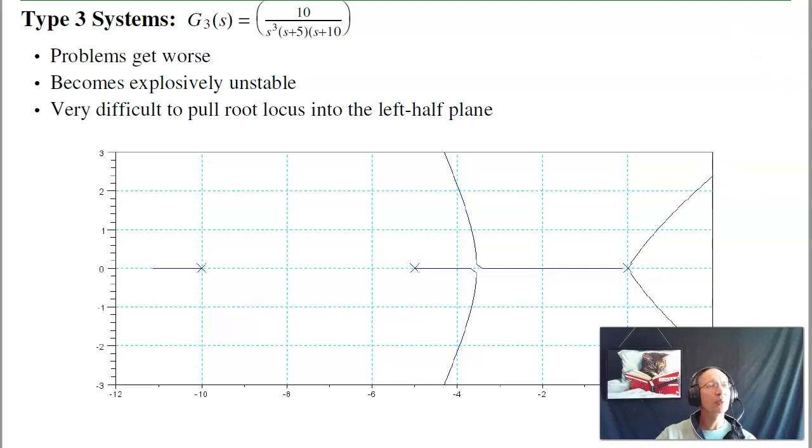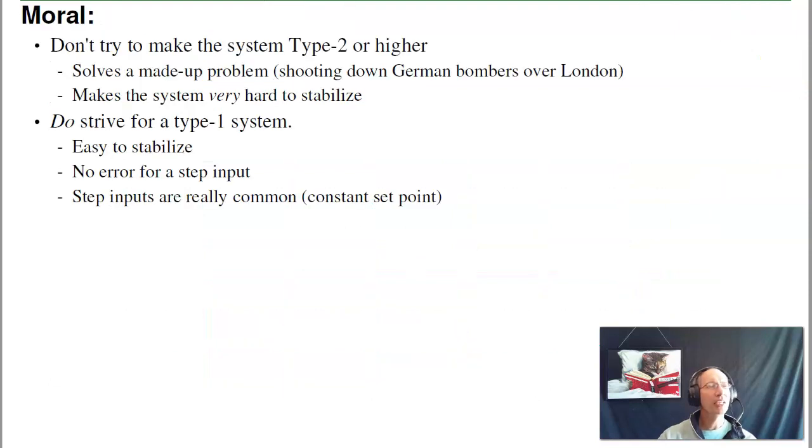So by looking at root locus, I can kind of go back and answer that question. Why do we use type 1 systems? Well, type 1 is better than type 0. It'll track a constant set point. Type 1 systems are pretty easy to stabilize. We don't go to type 2, however, because type 2 systems are really hard to stabilize. They tend to oscillate. So the moral of this story is don't try to make the system type 2 unless you really, really have to. You're going to make your life really hard if you make it a type 2 system.